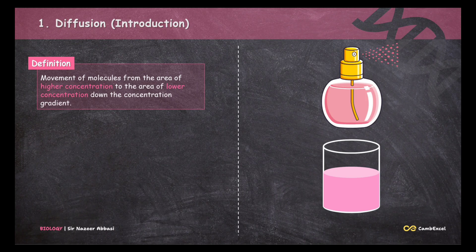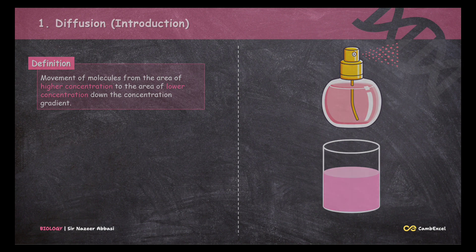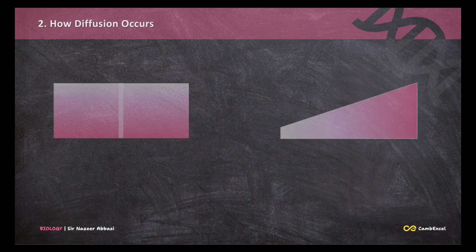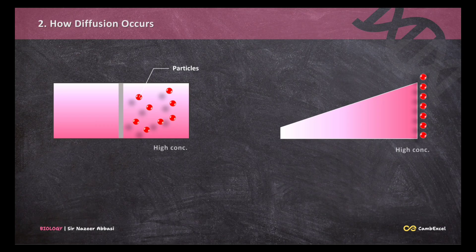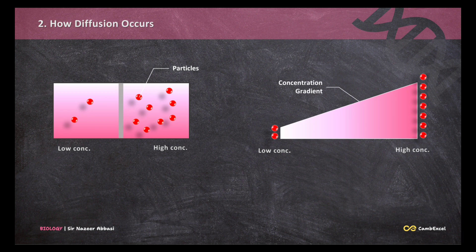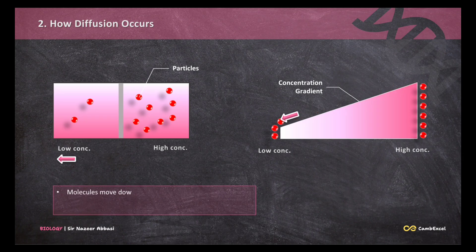We have used the term concentration gradient. To understand this, imagine a situation where we have a higher concentration of particles on one side and a lower concentration on another side. As you can see in the picture, there is a clear difference in concentration, which creates a concentration gradient and leads to the movement of molecules from higher to lower concentration. No energy is needed for this movement, which is why we also call it passive movement of molecules.